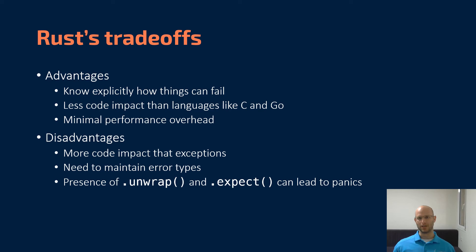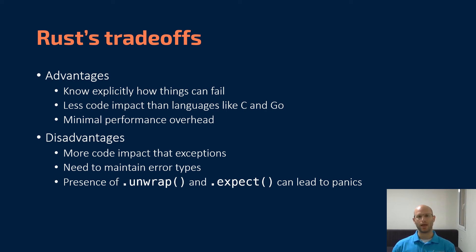On the disadvantages side, there is still more code impact than exceptions, especially compared with unchecked exceptions. You need to maintain error types and keep track of all the different ways something can fail in your application, which can be tedious. Also, many real-life examples of Rust end up using things like unwrap and expect, which turn your nice result values into a panic at runtime — which basically gives you back a lot of the bad sides of exceptions. So one of the best practices we recommend is not using these methods.